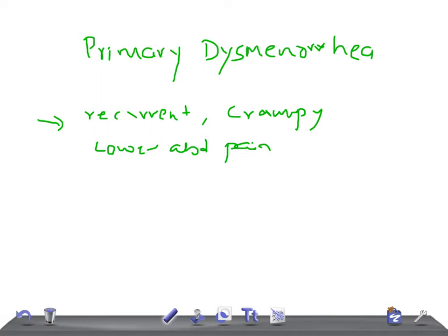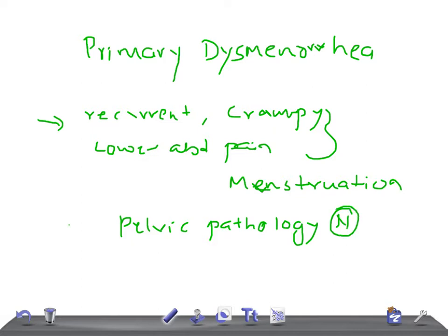With this abdominal pain they have nausea, vomiting, and diarrhea that occurs during menstruation. Remember for primary, the pelvic pathology is normal, so no pelvic pathology. It's a recurrent crampy lower abdominal pain that occurs during menstruation with normal pelvic pathology. This is the most common gynecological complaint in adolescent females.